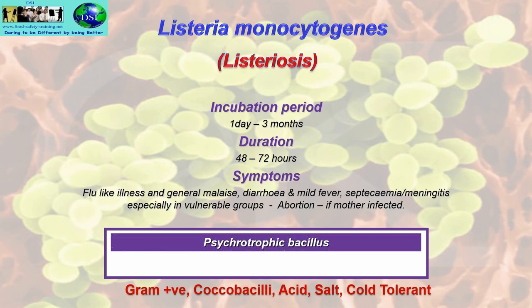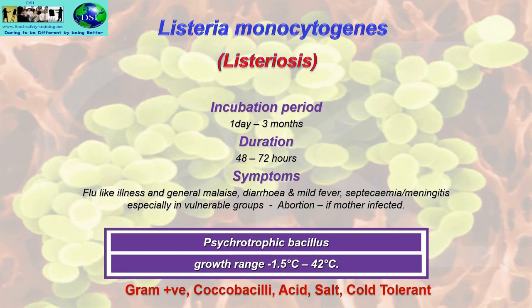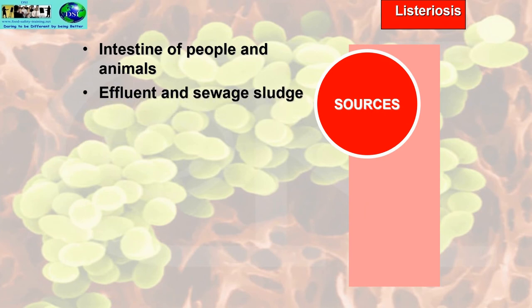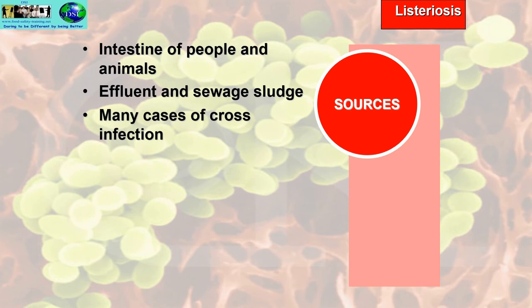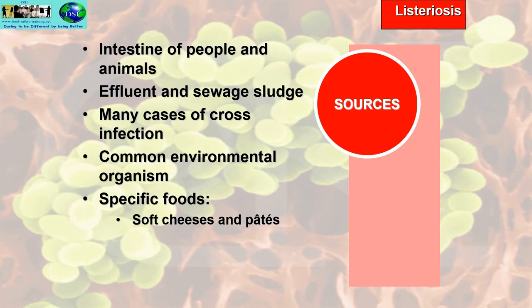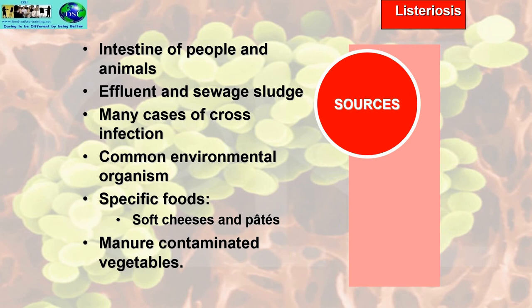Listeria is a psychrotrophic bacillus — it likes low temperatures. The growth range is −1.5°C to 42°C, so it can multiply across a wide range of temperatures. It is gram-positive, coccobacilli (globular shaped), and acid, salt and cold tolerant. Sources include intestines of people and animals, effluent and sewage sludge. It is a common environmental organism. Specific foods include soft cheeses and pâtés, especially unpasteurised varieties, and manure-contaminated vegetables.